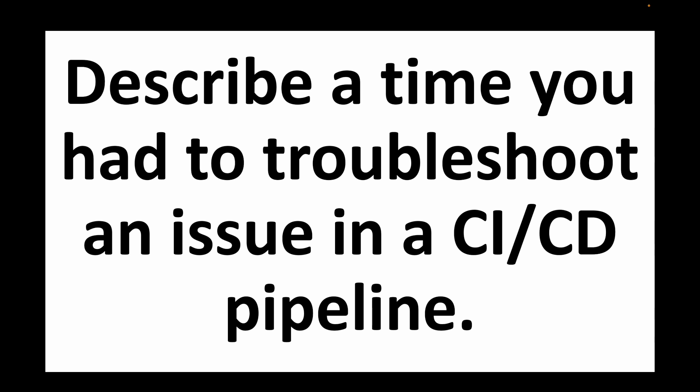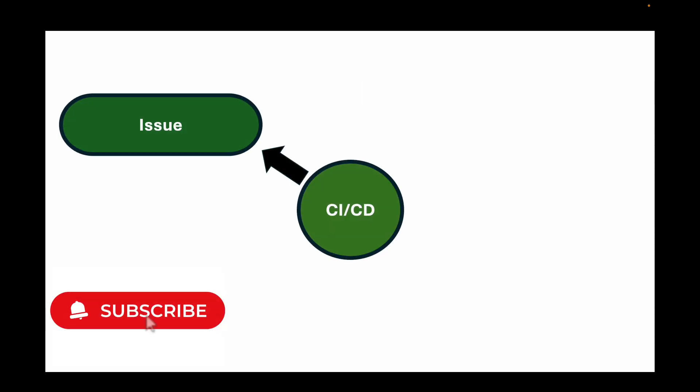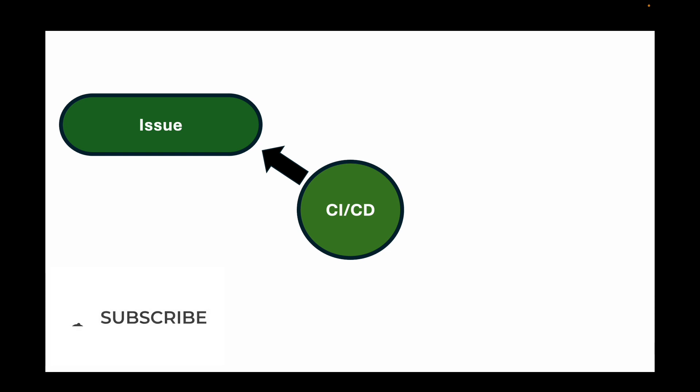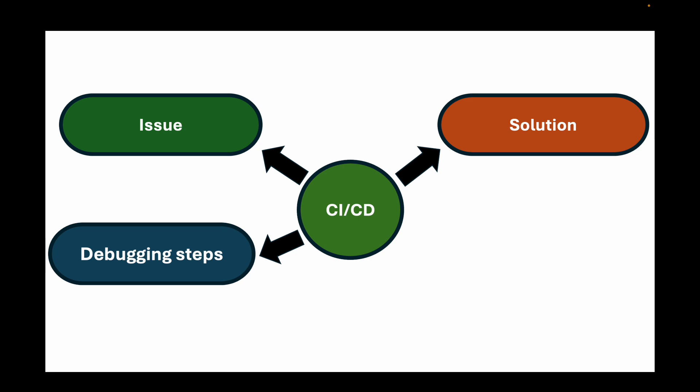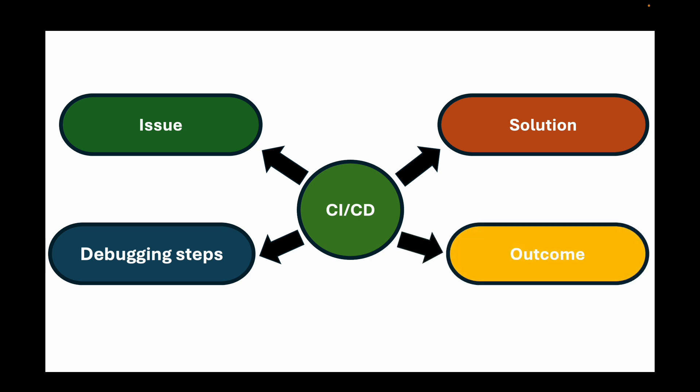When asked to describe a time you troubleshot an issue in a CI/CD pipeline, explain a real situation. For example: the issue — a deployment failed due to a dependency conflict; how you debugged it — checked logs, reproduced the error locally, identified the broken dependency; the solution — pinned the correct version in the build config and added a pre-deployment dependency check; and the outcome — faster resolution of future failures.